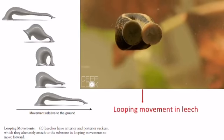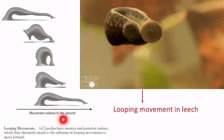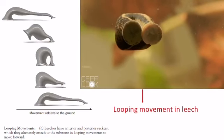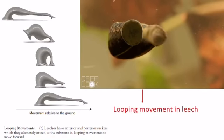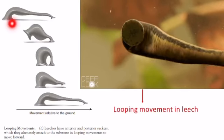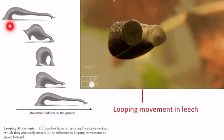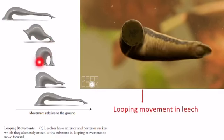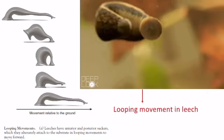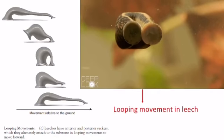This diagram shows the direction of movement of a leech. Leeches have anterior and posterior suckers which they alternately attach to the substrate in looping movements to move forward. For example, the leech first attaches its posterior sucker to the substrate, then attaches the anterior sucker, then reattaches the posterior sucker, moving forward in this way.